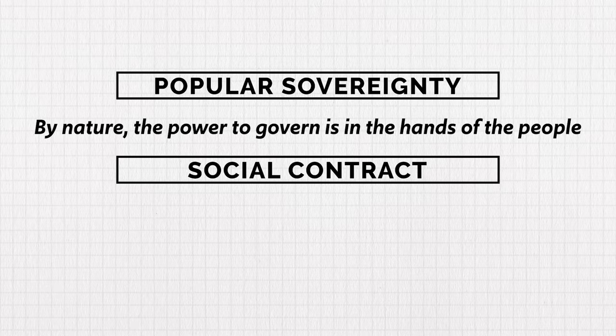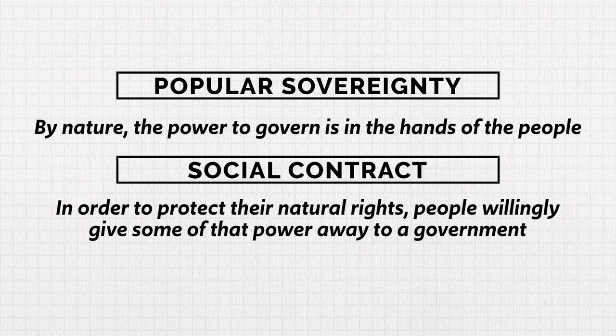The second Enlightenment idea you need to know is popular sovereignty and the social contract. By nature, the power to govern is in the hands of the people — that's popular sovereignty. In order to protect their natural rights, people willingly give some of that power to a government — that's the social contract. The state is the servant of the people. If the government becomes tyrannical, the people's duty is to overthrow it.